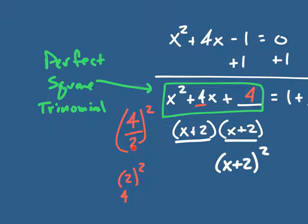When you take your middle term and divide it by 2, you're getting two numbers that are going to add to that middle term. You always divide by 2 because you're creating a perfect square trinomial. When you have a perfect square trinomial, you get two binomials that are the same multiplying by itself. Then squaring it gives you two numbers that multiply to the last term — that's what creates the perfect square trinomial.